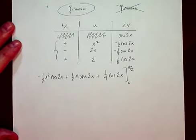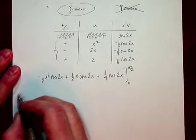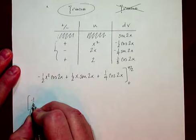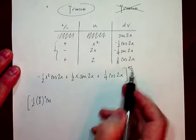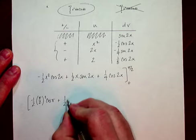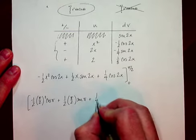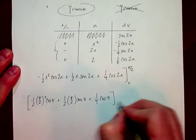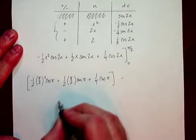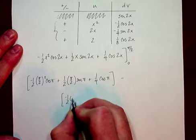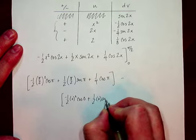All right. Well, that seems like it went really easily. And actually, it did. Let's go ahead and evaluate this. So we have negative 1/2. And then x squared is going to be π/2 squared. And then cosine of 2 times π/2 is just cosine of π. The next term is 1/2 π/2 and sine of π. And the last one is going to be 1/4 cosine of π. And that is sort of your big F of π/2. And then you need to subtract big F of 0 by plugging 0 into all of these places.